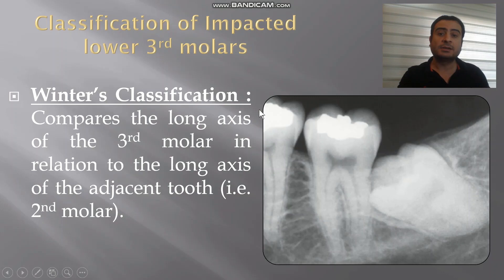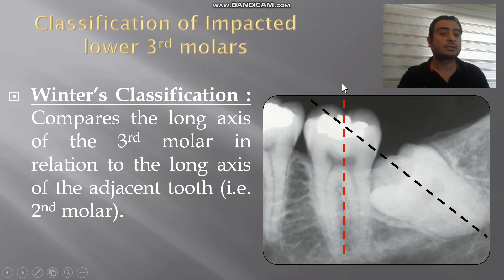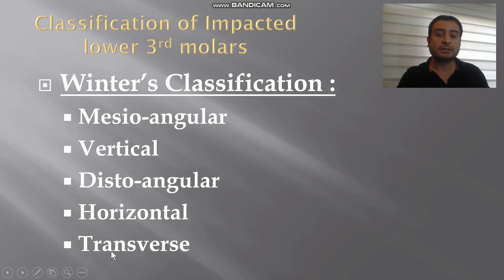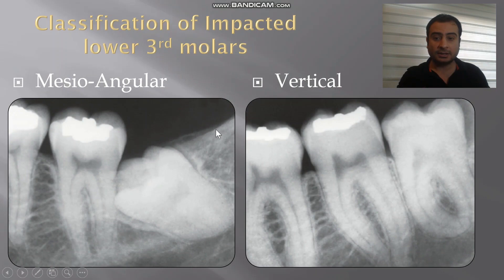The first classification is the Winter classification, which simply compares the long axis of the third molar in relation to the long axis of the adjacent teeth. Sub-classifications include mesioangular, vertical, distoangular, horizontal, and transverse. The mesioangular is the most common and is considered the easier one to manage. The second most common is vertical, and the most difficult to manage is the distoangular.